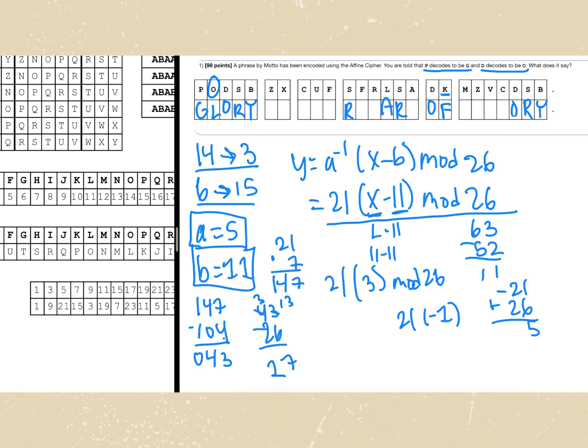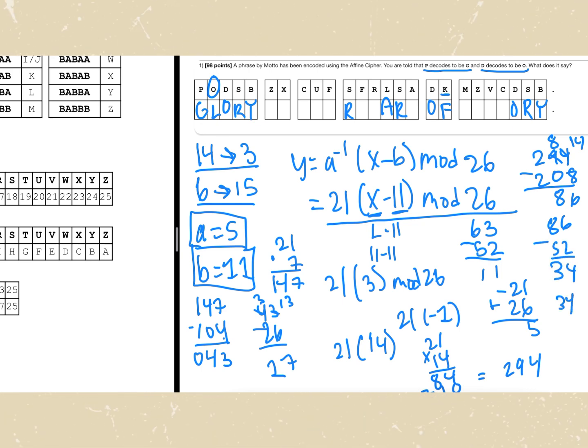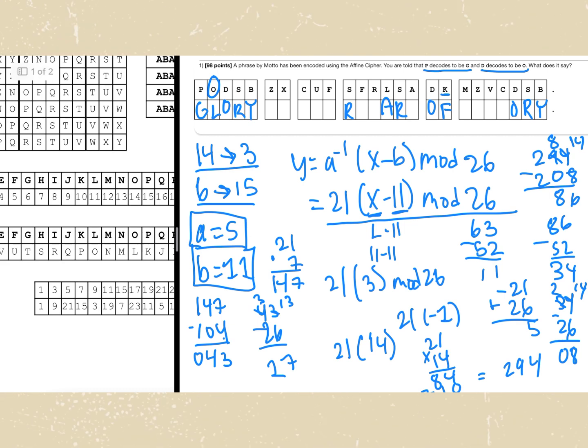What's next? We can probably do z. Z is 25. So we're going to have 21 times 25 minus 11 which is going to be 14. And then 21 times 14 equals 294. We can run a modulus 26 on that now. So 294 minus 208, then 86 minus 52, then 34 minus 26 gives us 8. So we have 8 which is i. Glory is. So I can also put z to i right here.